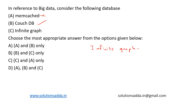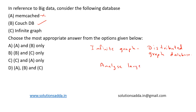InfiniteGraph is a distributed graph database suitable for analyzing large-scale graph data, making it also suitable for big data. Based on the options, option B (CouchDB) and option C (InfiniteGraph) are the only ones suitable for big data, so B and C is the correct answer.